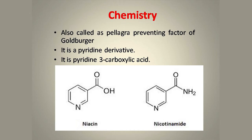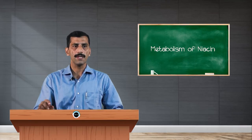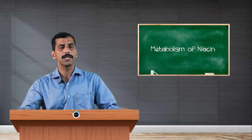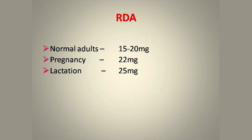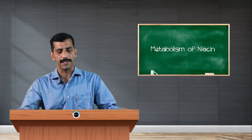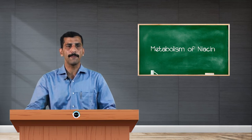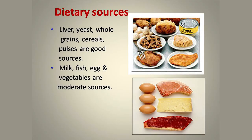The aldehyde form is called niacin and the amino form is called nicotinamide. The normal requirement of niacin per day varies from individual to individual. Normal adults require about 15 to 20 milligrams of niacin per day, and for pregnancy and lactation the requirement is slightly higher, around 22 to 25 milligrams per day. The major dietary sources of niacin include liver, yeast, whole grains, cereals, and pulses. It is also available in animal sources such as milk, fish, and eggs, which are moderate sources of niacin.